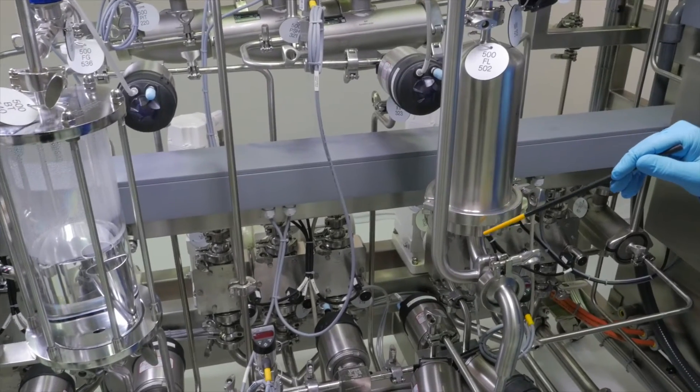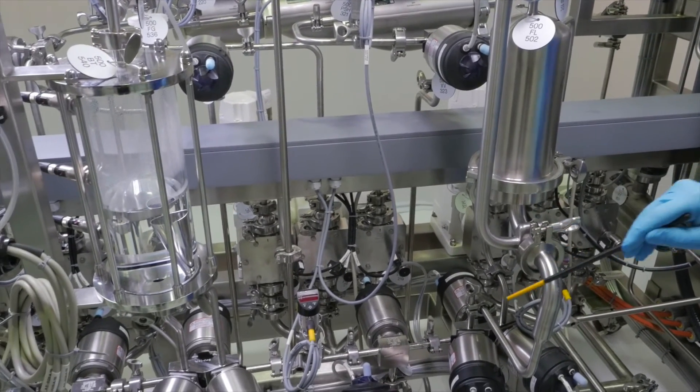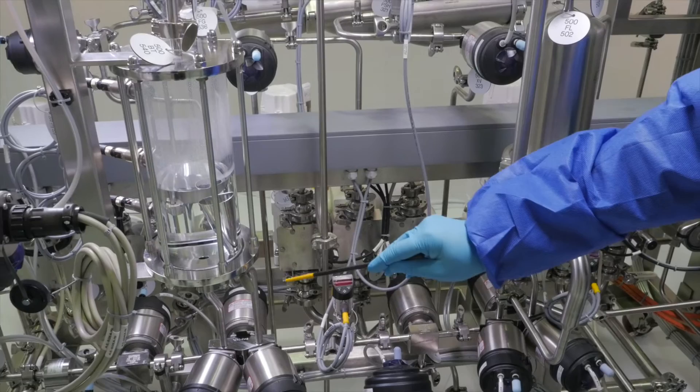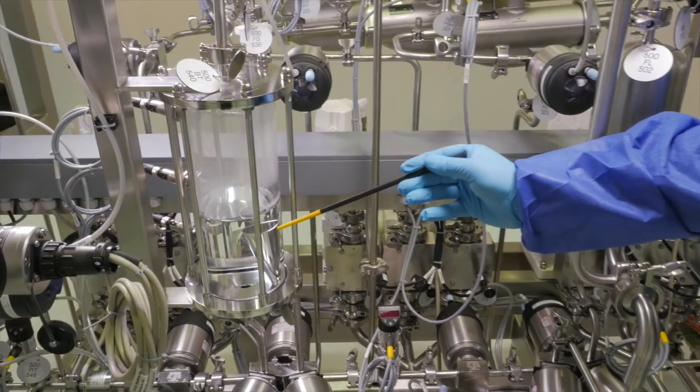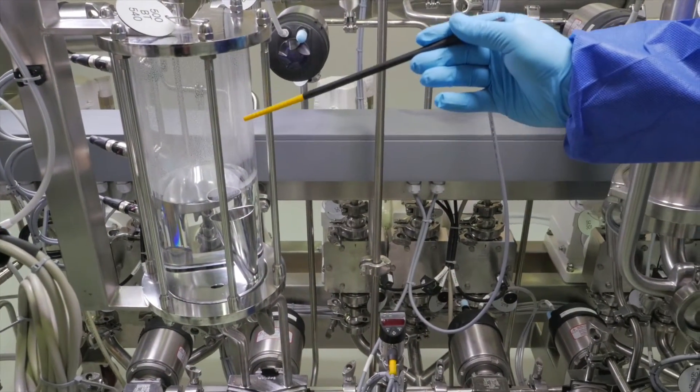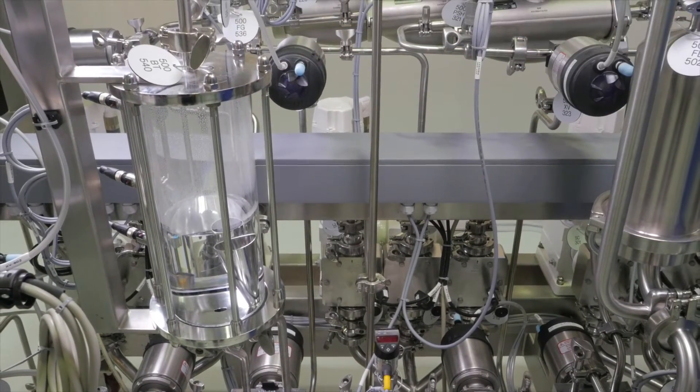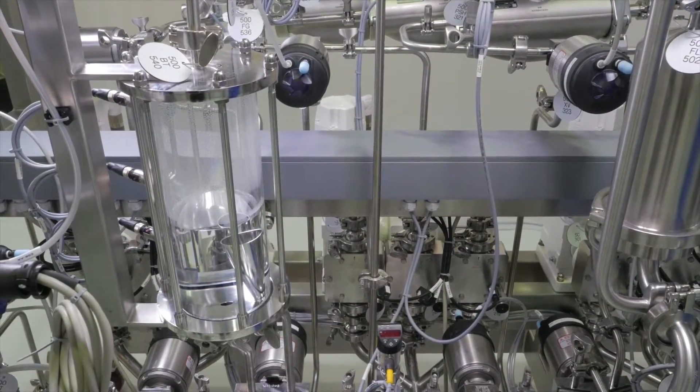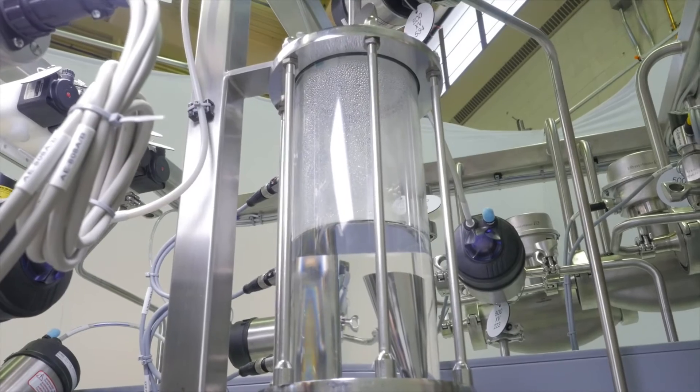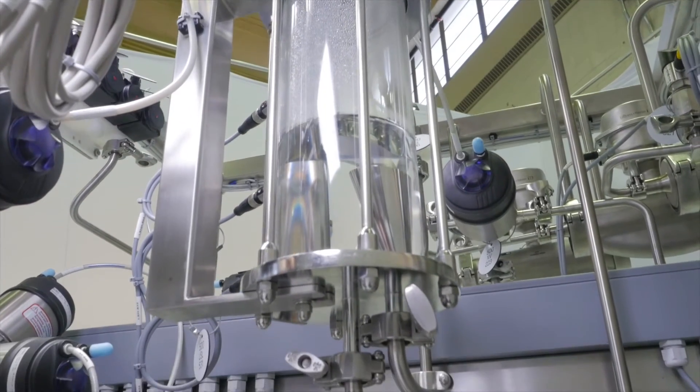An optional pre-column filter protects the column from any particulates in the incoming process fluids. Our bubble trap option removes air from the system that could negatively impact the chromatography. The bubble trap can be isolated from the process flow when sending protein feed directly to the column.